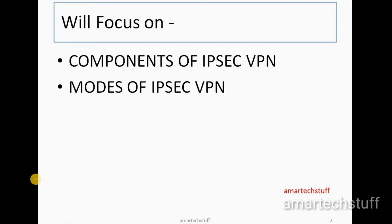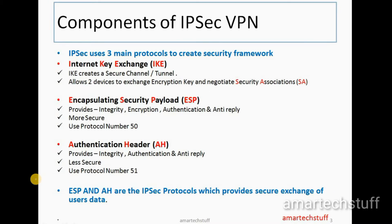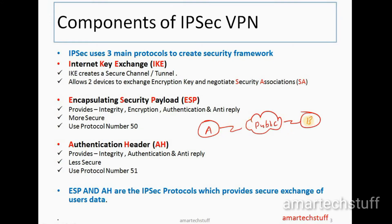Now in this video let's focus on two topics: components of IPSec VPN and modes of IPSec VPN. When we talk about two nodes A and B communicating over a public network, a user sends private data to B and an intruder or attacker sitting in the public network can intercept it. We need to protect that data from hackers. There are three main components of IPSec VPN, the very first being IKE.